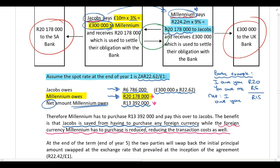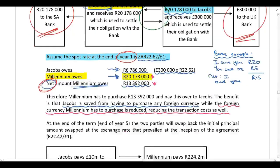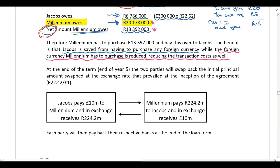This happens every single year. Each year, both companies pay their respective banks what they owe them. Instead of Jacobs paying Millennium and Millennium paying Jacobs separately, they calculate the net amount and only transfer the net amount across. At the end of five years, they swap the money back — Jacobs gives the 10 million pounds back to Millennium, and Millennium gives the 224.2 million rand back to Jacobs. Each party then uses that money to repay their banks.